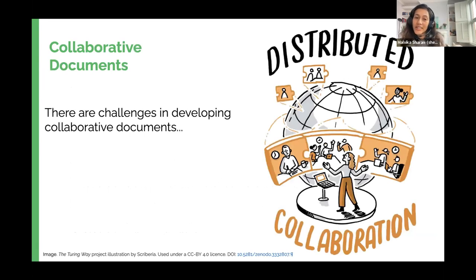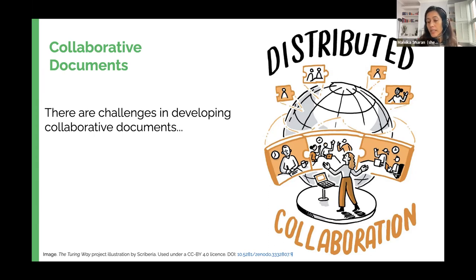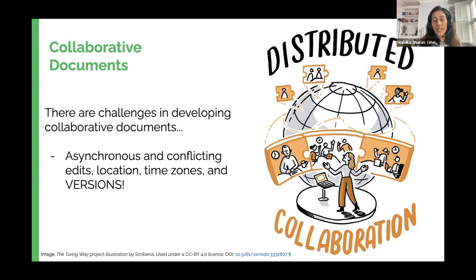We are today mostly focusing on GitHub for collaborative documents, or in general thinking about collaborative documents. There are a lot of challenges when you work on collaborative documents, especially when people are working in different time zones, in different computers altogether, you're not sitting in the same room, you have less live conversation, which means it's asynchronous and could have lots of conflicting edits. You may even lose track of locations if people are using different versions, and how would you go back to a previous edit or learn what has changed?